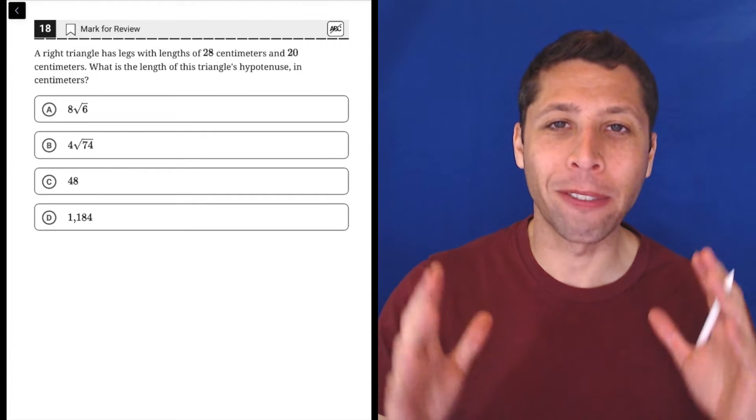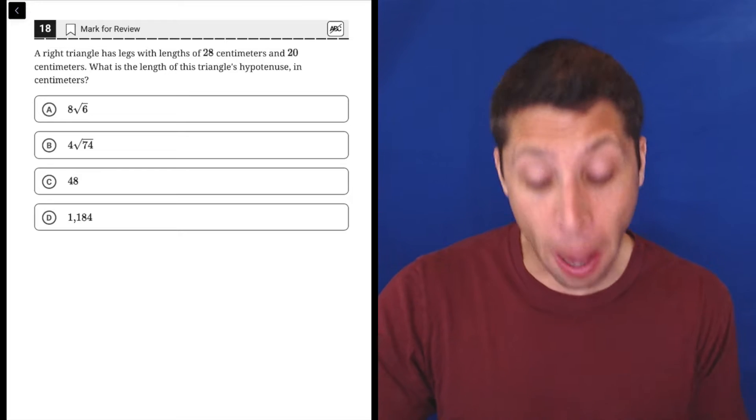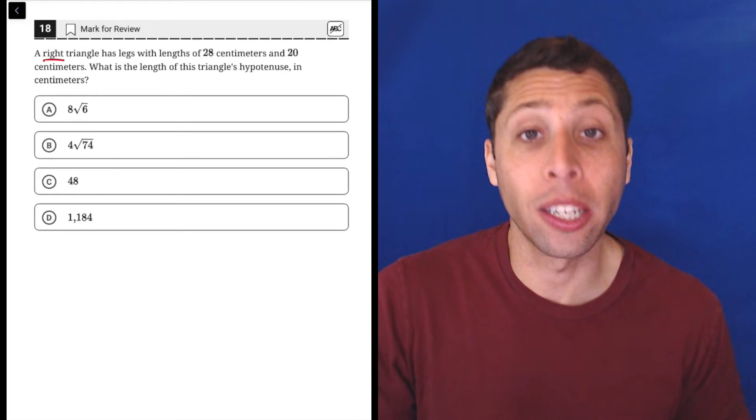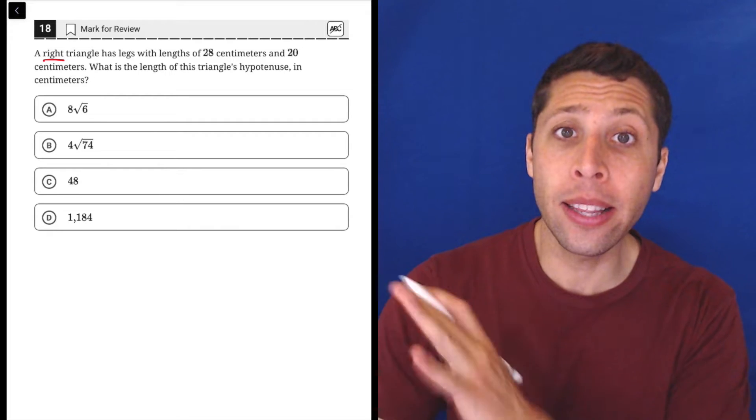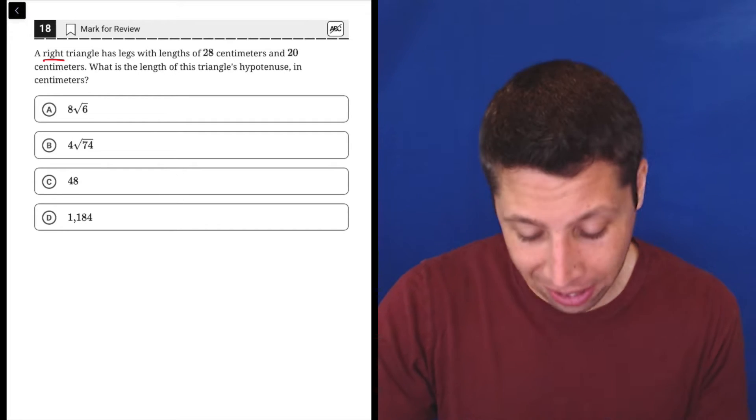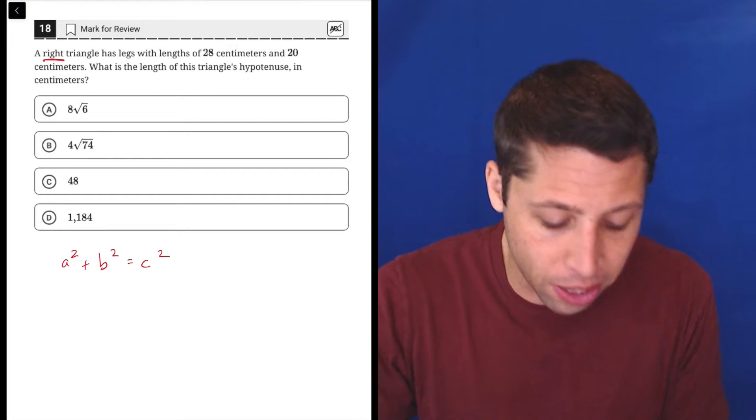Okay, hopefully at some point you have learned Pythagorean theorem. It's one of the most important formulas for all of geometry, specifically when we have right triangles. That's the one we're going to use for any sort of distance. So it is in that reference chart that's given to you on the SAT, but you've probably learned it as A squared plus B squared equals C squared.